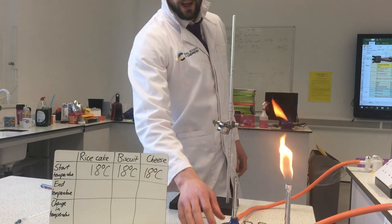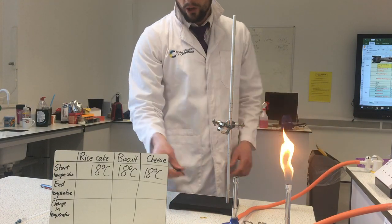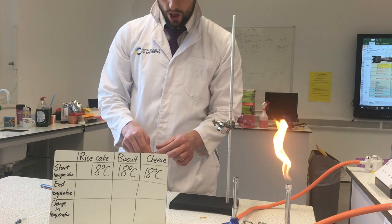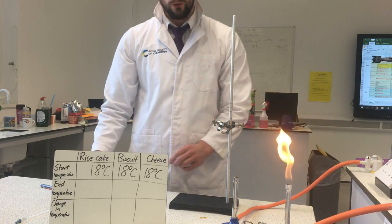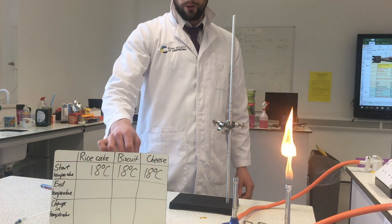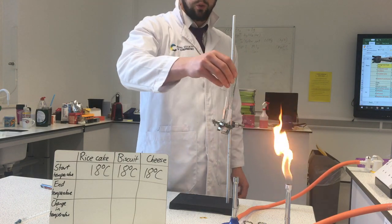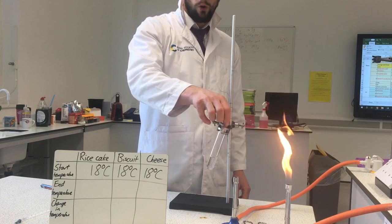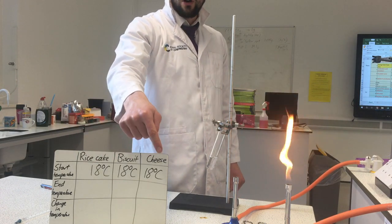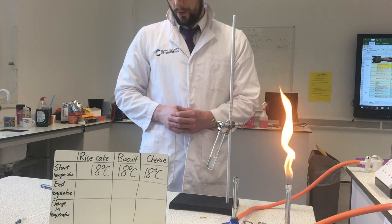Hello Year 8, it's Mr Wilson here. Today I'm going to test how much chemical energy is stored in each of three different foods. I'm going to do that by burning the food and heating some water. I've got three boiling tubes of water — they've all got 20 millilitres of water in them and they're all at 18 degrees. I've written down the start temperature as 18 degrees for all three of my experiments.